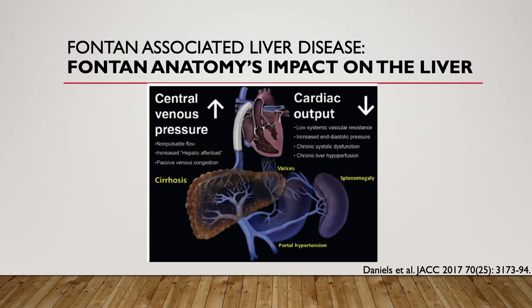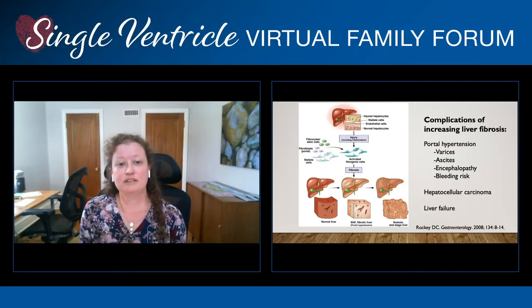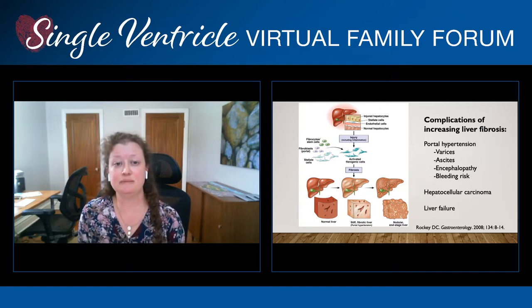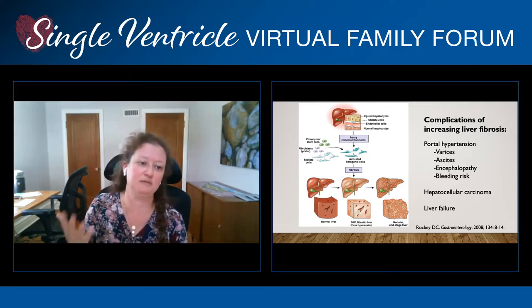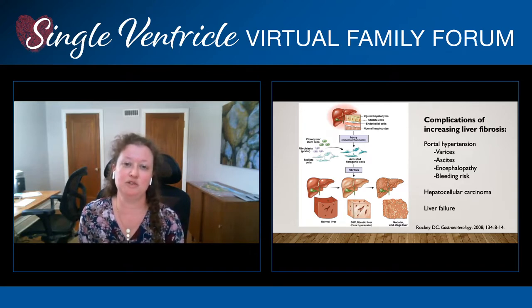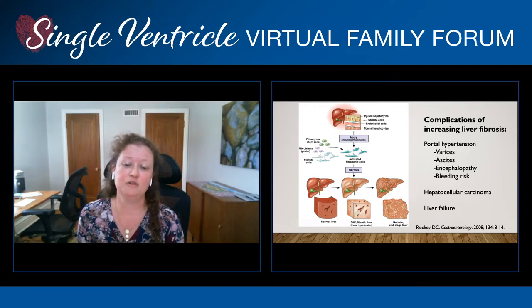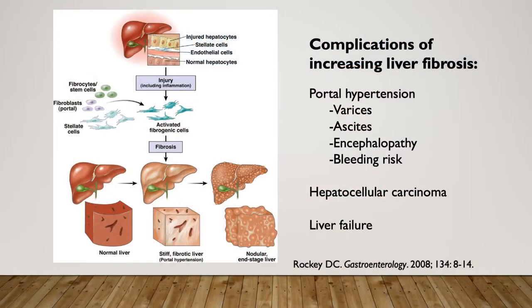This can cause chronic liver hyperperfusion, and over time it results in something called portal hypertension. When you injure liver cells, cleanup cells come in to fix them and produce scar tissue and fibrous tissue over time. That active formation of fibrous tissue is developing over years in the Fontan patient population. If you get enough scar tissue, it is called cirrhosis or end-stage liver disease, and you can have a very nodular liver.